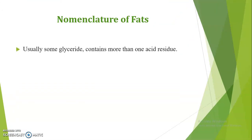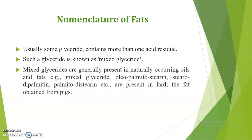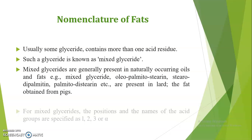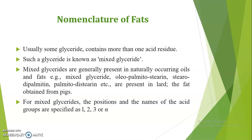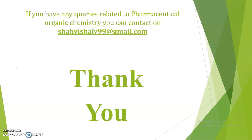For mixed triglycerides, some glycerides contain more than one acid residue and are known as mixed triglycerides, which are generally present in naturally occurring oils and fats. Examples include oleopalmitosterein (consisting of oleic acid, palmitic acid, and stearic acid), stereodipalmitin, and palmitodistearin, which are present in lard — the fat obtained from pigs. For mixed triglycerides, the position and names of the acid groups are specified as 1, 2, 3 or alpha, beta, etc. In this way the nomenclature of fats is carried out.